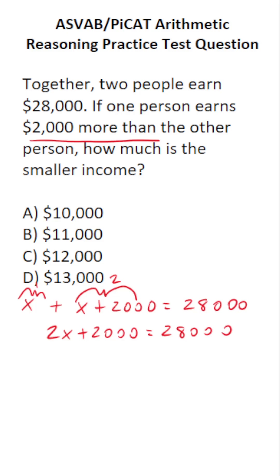We're going to subtract 2,000 from both sides to get 2X by itself. This crosses out, leaving you with 2X over here. $28,000 minus 2,000, you should be able to do mentally. That's $26,000.